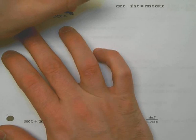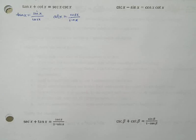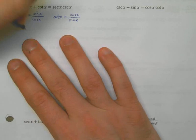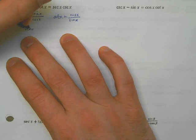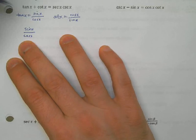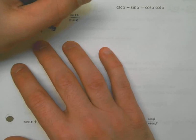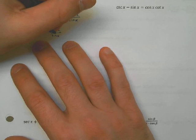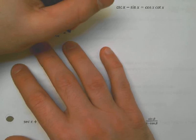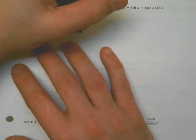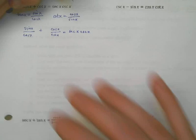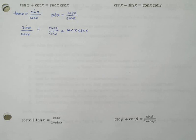That becomes sine of x times sine of x. The second term already has sine on the bottom, so it needs cosine in order to get up to the common denominator — so I have cosine of x times cosine of x. I need to show that this equals cosecant x times secant x. Sine of x times sine of x is sine squared of x, and cosine times cosine is cosine squared of x. Now I need to show that this fraction on the left equals the stuff on the right. You might see it now, because sine squared plus cosine squared is just 1.